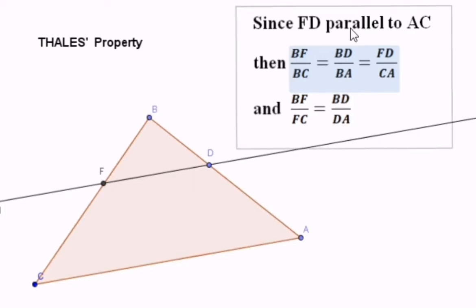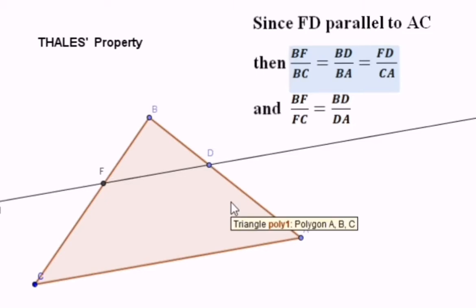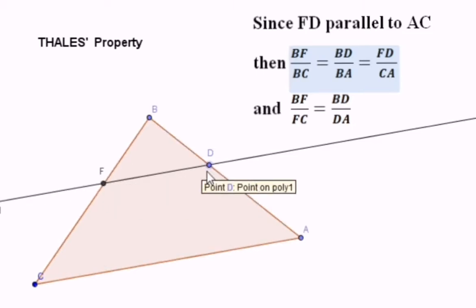BF is a side and BC is a side. So when we have a side over a side, we will have three ratios: one, two, and three. When we have a part over part, for example BF over FC equals BD over DA, we cannot continue. We cannot say they are equal to FD over CA.